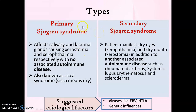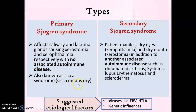There are two types: primary and secondary Sjögren's syndrome. Primary Sjögren's syndrome affects salivary and lacrimal glands causing xerostomia and xerophthalmia, with no other associated autoimmune disease. Whereas in secondary Sjögren's syndrome, in addition to involvement of lacrimal and salivary glands, there is also another associated autoimmune disease, which might be rheumatoid arthritis, systemic lupus erythematosus, or scleroderma. Primary Sjögren's syndrome is also known as sicca syndrome, since the word 'sica' means dryness.